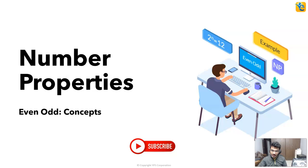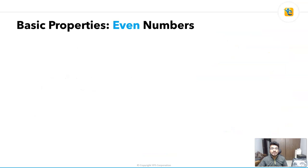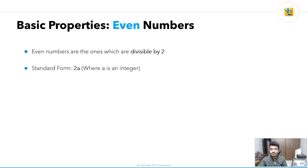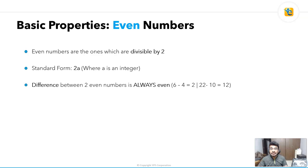Let's go with the basic properties of even numbers. Even numbers are those which are divisible by two — numbers like 2, 4, 6, 8 that do not leave any remainder when divided by two. The standard form for all even numbers is 2a, where a is an integer — it can be positive or negative. The difference between two even numbers is always even: for example, 6 minus 4 equals 2.